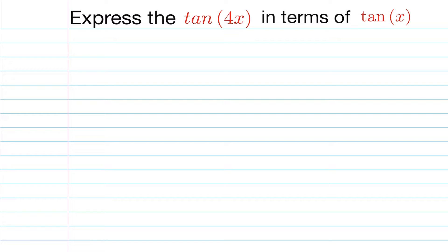The double angle formula for the tan function is as follows. To be able to use this function, we're going to make the observation that the tan of 4x can be expressed as the tan of 2 times 2x.